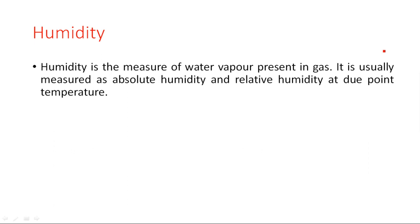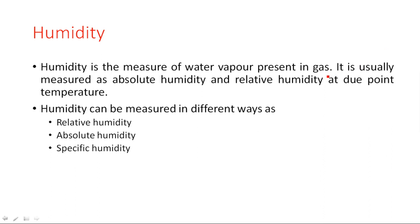In the case of absolute humidity, you are calculating the humidity with respect to temperature. For relative humidity, you calculate the humidity in the environment with respect to the exact temperature — that is known as relative humidity. If you calculate humidity per unit volume with respect to temperature in a particular area, that is treated as specific humidity.